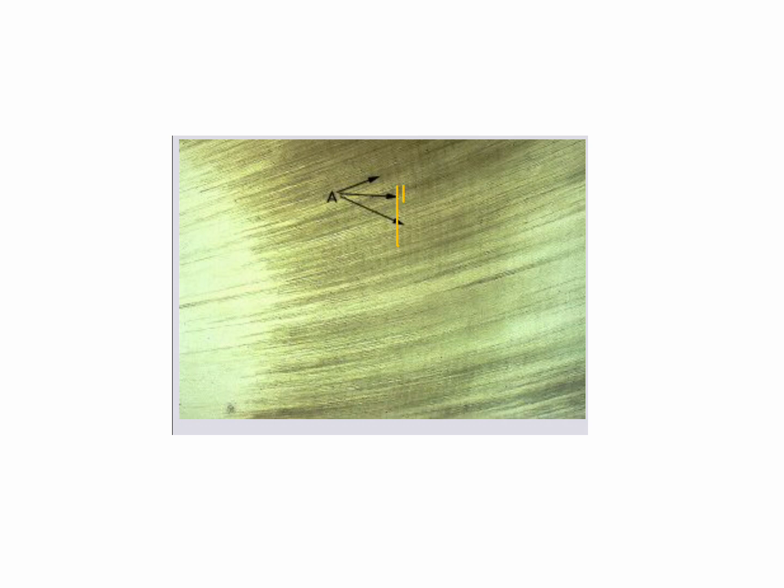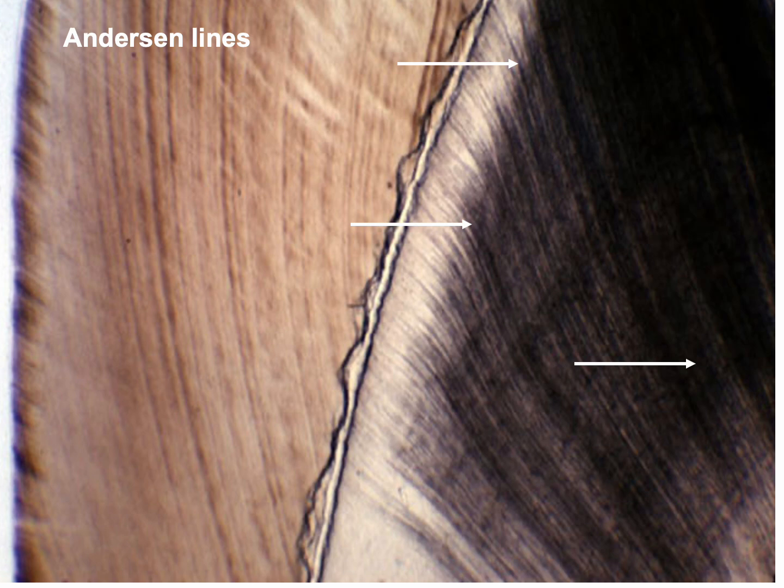At very high magnification you can see the von Ebner lines — they appear as alternating dark and light lines because there is a difference in mineralization. This is the same principle as the structural lines in enamel: they represent differences in composition and mineralization, reflecting activity or inactivity of secretion.